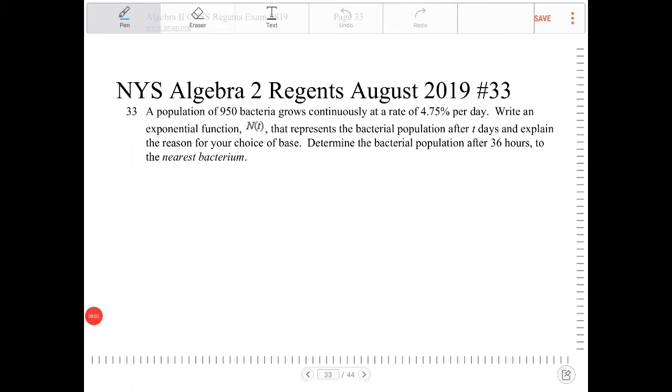A population of 950 bacteria grows continuously at a rate of 4.75% per day. Write an exponential function, N of T, that represents the bacterial population after T days and explain the reason for your choice of base.